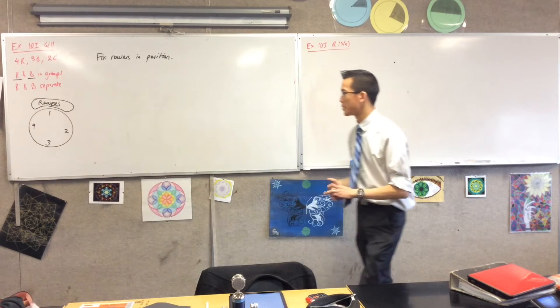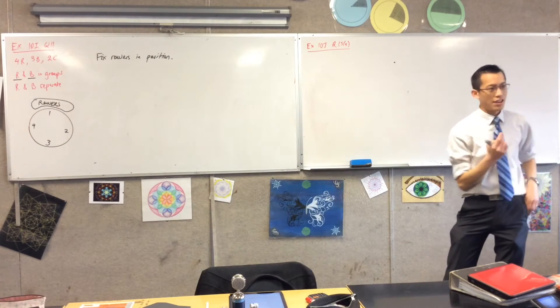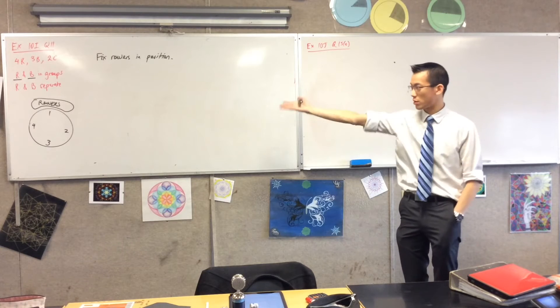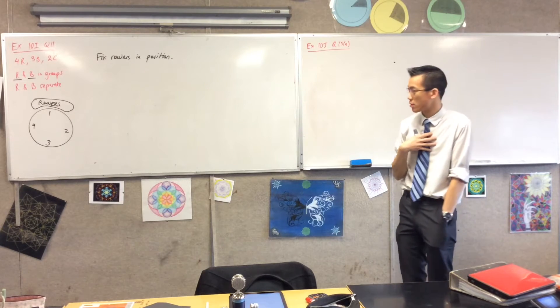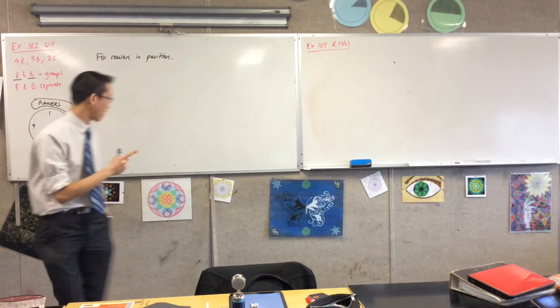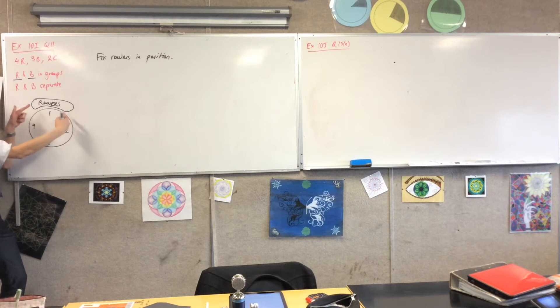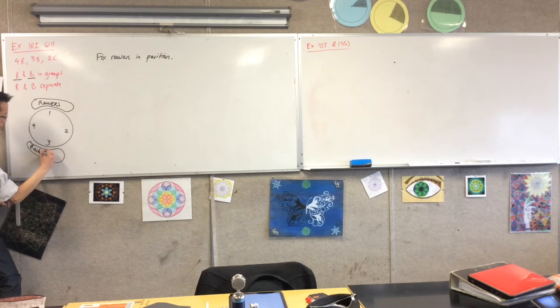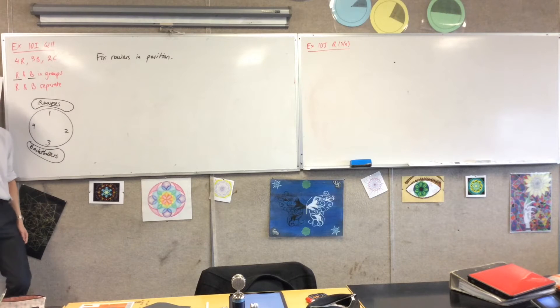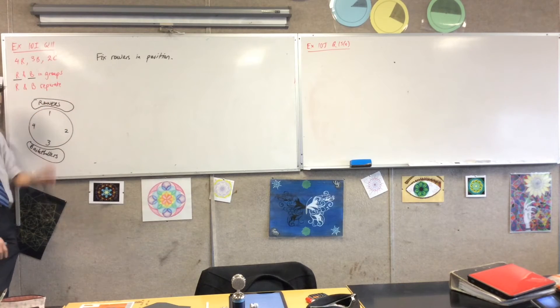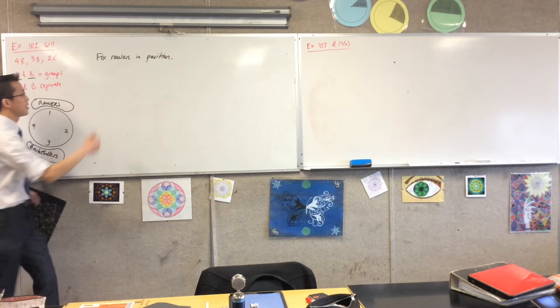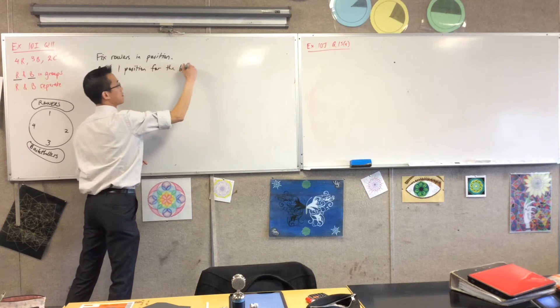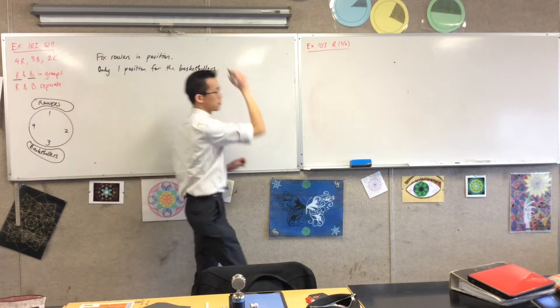Now I can start thinking about arrangements, but the conditions are still playing out in my head. I notice that if another group comes along, for example, say the basketballers, how many options in those four spots can they go into? There's only one spot they can go in, because this option's out, this option's out, because they can't sit next. So therefore, the basketballers have to be here. So far, I only have one arrangement. The rowers all look the same, so I just lock them in spot. The basketballers have to sit here. So I'm going to say, only one position for the basketballers.